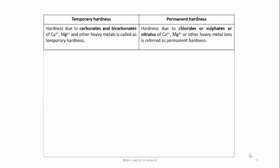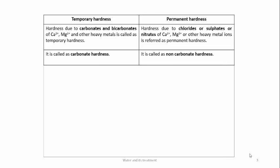Hardness is the soap consuming capacity, and it is divided into two parts: temporary hardness and permanent hardness. Temporary hardness is due to the carbonates and bicarbonates of calcium and magnesium present in water. Permanent hardness is due to the chlorides, sulfates, or nitrates of calcium and magnesium. This is very important for numericals. Temporary hardness is also called carbonate hardness, whereas permanent hardness is also called non-carbonate hardness, as it doesn't contain any carbonates.